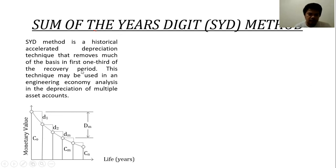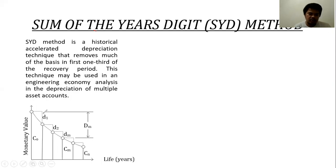In the Sum of the Years Digit method, the yearly depreciation is larger in the initial years. As compared to later years, it becomes smaller as the machine or property nears its economic life. The depreciation in year one is bigger, then it gets smaller and smaller each year.